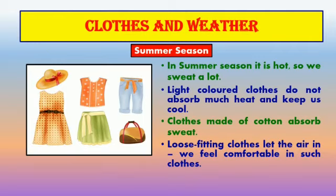Clothes and weather. Do we wear one type of clothes for the whole year? No. We wear different clothes according to the weather. In the summer season it is very hot and we sweat a lot, so we wear light colored cotton clothes. The cotton absorbs the sweat and the light colored clothes do not absorb much heat and keep us cool. We also like to wear loose fitting clothes to let the air in. We feel comfortable in such clothes.